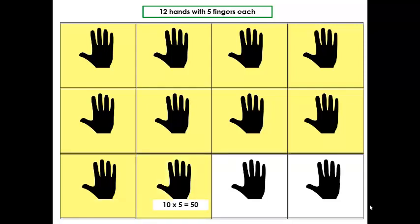Nine hands with 5 fingers will give us 45 fingers. Ten hands with 5 fingers will give us 50 fingers. Eleven hands with 5 fingers will give us 55 fingers. Twelve hands with 5 fingers will give us 60 fingers.